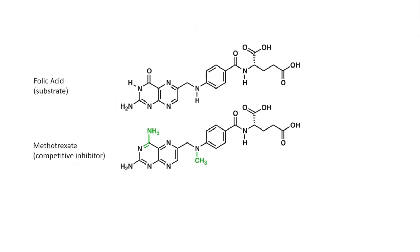Let's look at the real life example of the drug methotrexate. Methotrexate is an anti-cancer drug, and inhibits the production of tetrahydrofolate, a component required for the production of the nucleotide thymine. Thymine is used in DNA replication, and therefore, with its production inhibited, affected cells are unable to replicate or produce proteins necessary for their survival.